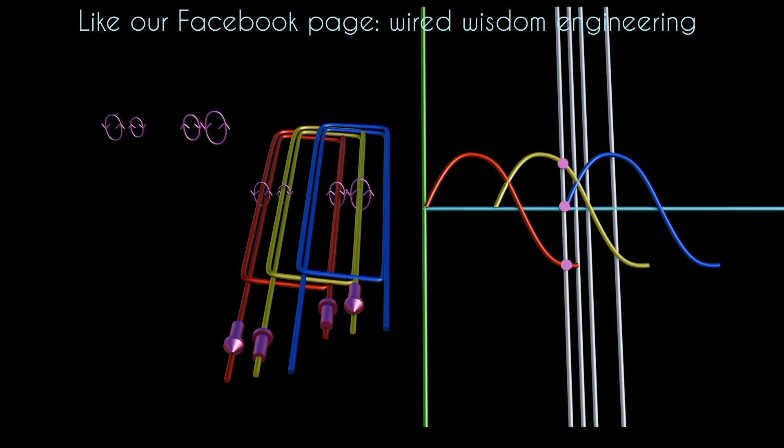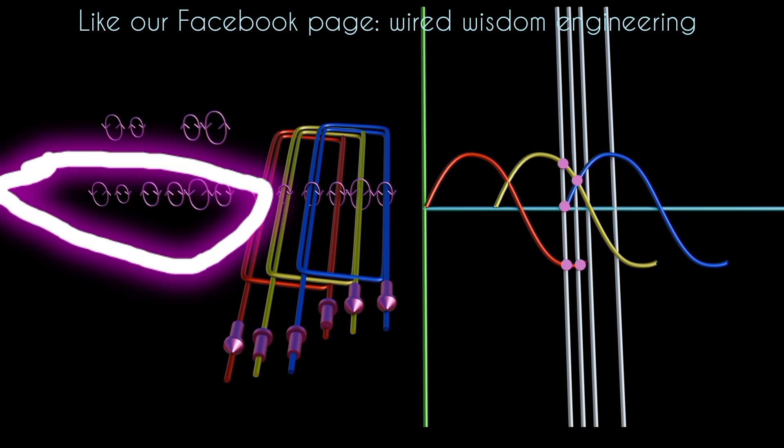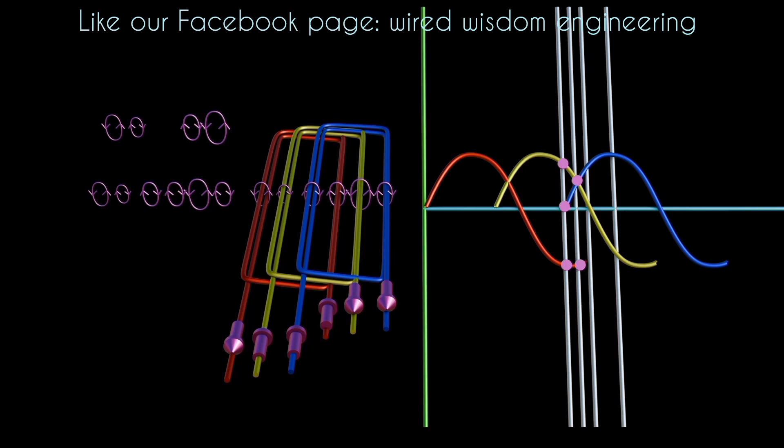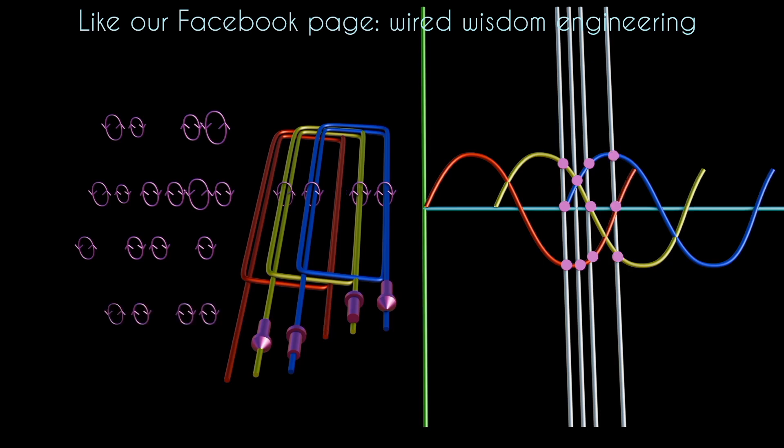Next, the red phase current is on the negative, the yellow and blue phases are at the positive. The direction of current in the blue and yellow phases are similar, while the direction of current in the red phase is reversed. Hence, let's freeze this scenario's magnetic field formed. Next, the red phase is still on the negative half cycle, yellow phase has gone to zero, and blue phase is on the positive. Also, let's freeze this scenario's magnetic field. The last scenario: the red phase is zero, yellow phase is negative, and blue phase is positive. Then let's freeze the magnetic field produced at this scenario.